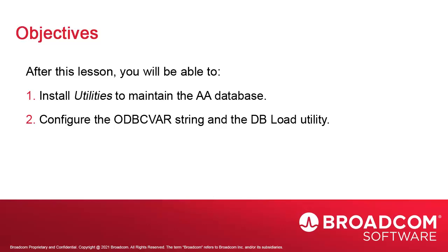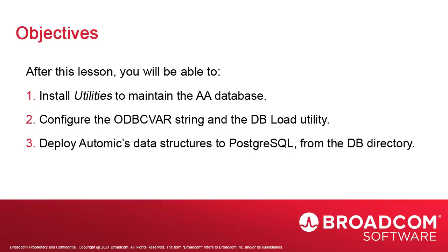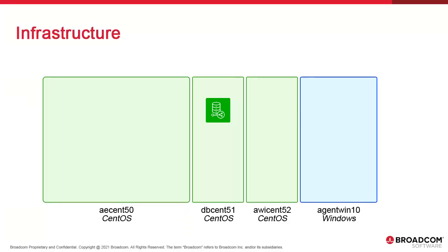We use dbload as an example since we need it to deploy data structures. dbload loads the atomic data structures. It requires the db directory, which contains all the SQL files with the data structures for every atomic version. We'll select version 21. This is the environment; we're still working on the dbhost. We install the utilities and configure them to connect to PostgreSQL, then copy the db directory from the atomic install package and load the data structures in PostgreSQL using the dbload utility.